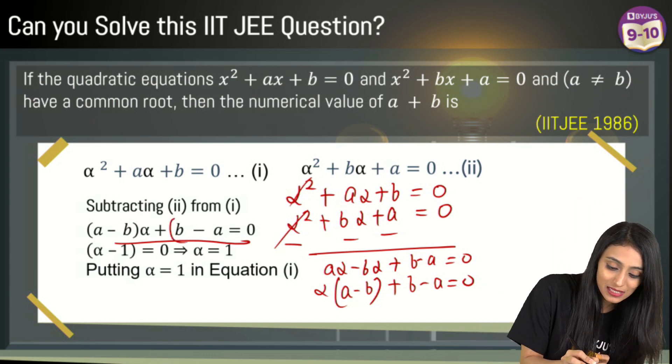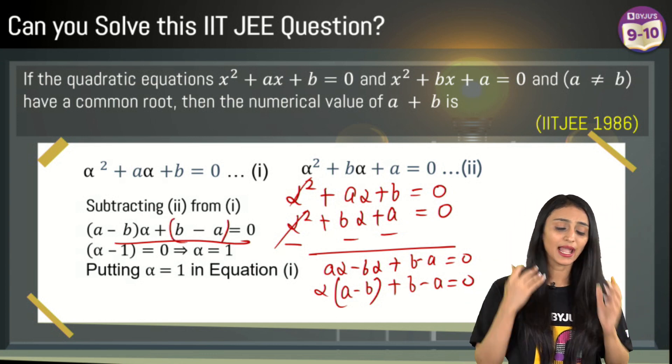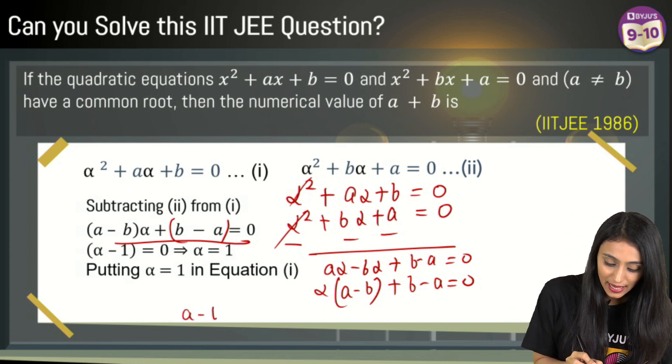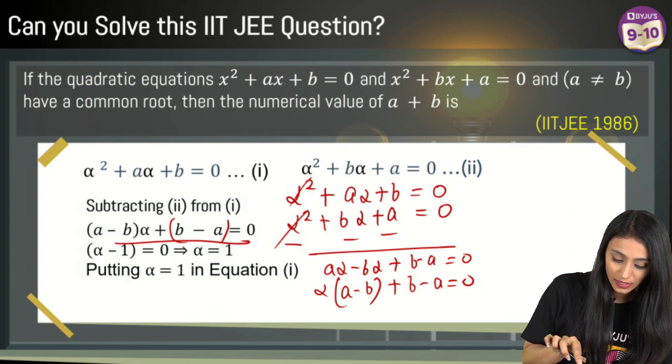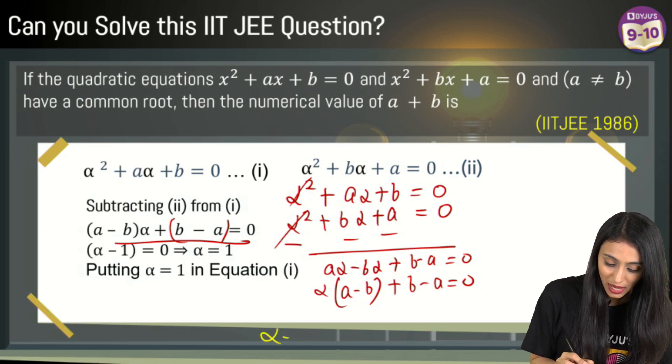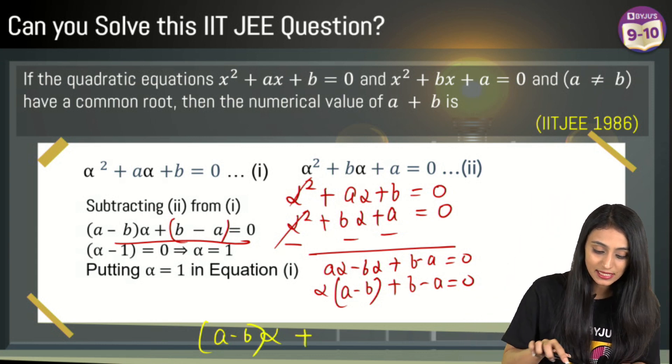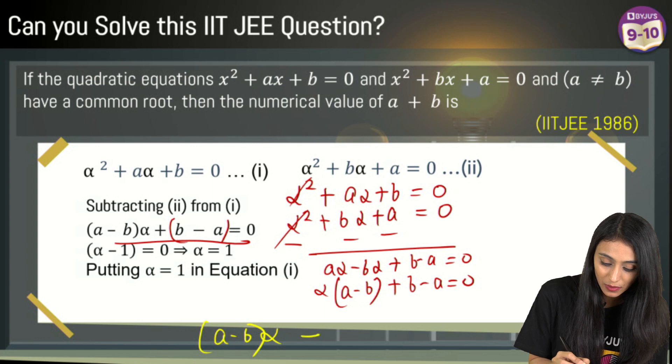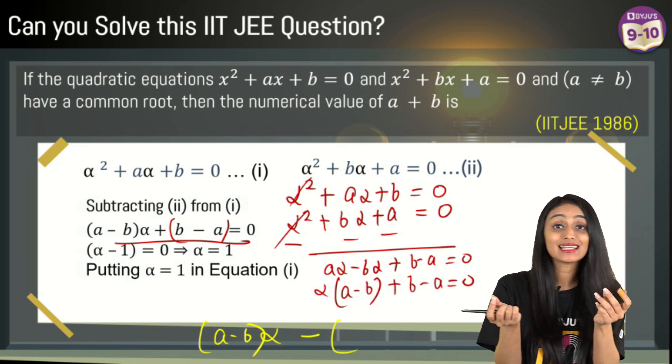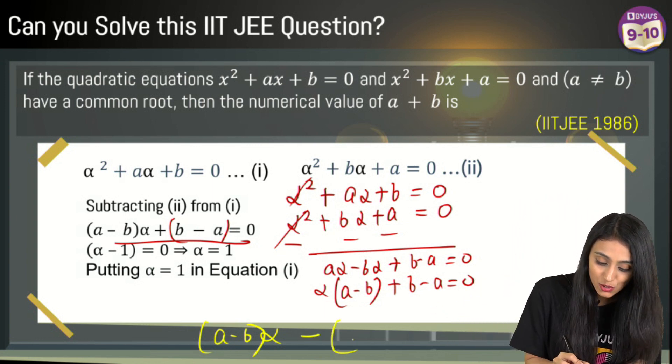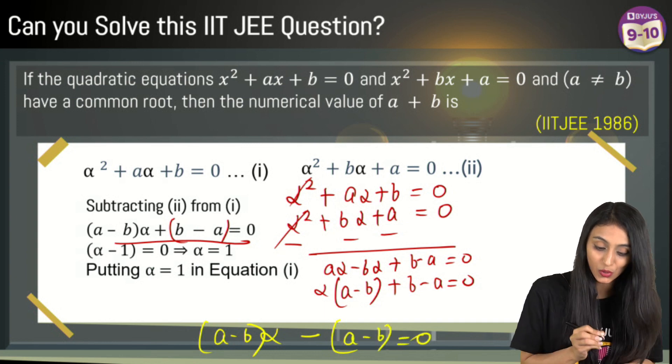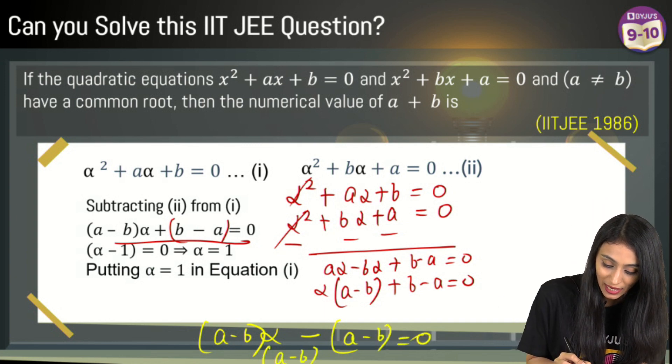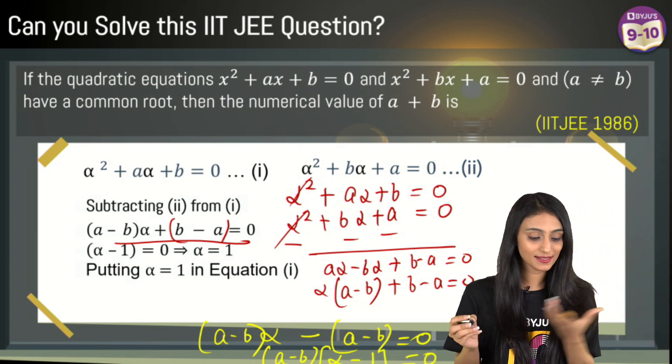Now what I will do is, if I keep this in bracket and write this as (a - b)α plus, this is b - a. If I take minus sign common from here, what will this become? If I take minus sign common, the terms inside the brackets interchange, right? So that's going to be (a - b) = 0. Now let's take (a - b) common from here. So I'll have (α - 1) = 0. Make sense? I've taken this common. So now we have these two brackets, (a - b) and (α - 1).